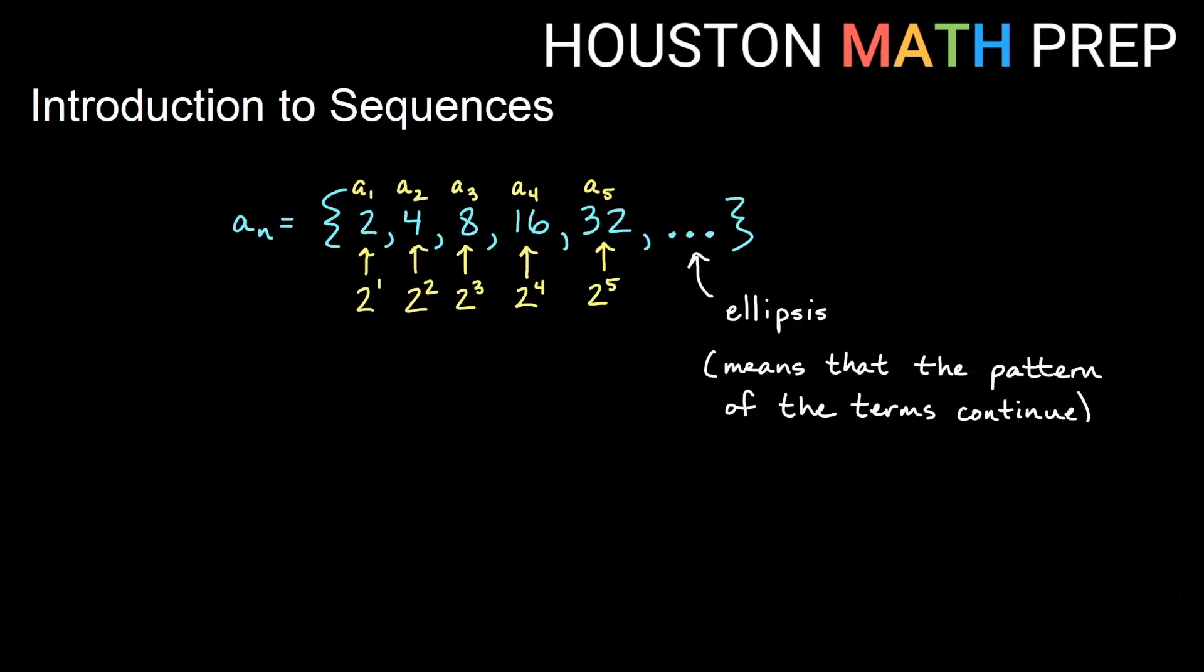We can also relate the term itself to a formula that might produce that term. You'll notice here my a1 is 2 to the 1 and my a2 is 2 squared, a3 is 2 cubed, etc. So it looks like the power of 2, 2 to the 4th, is the 4th term. 2 to the 5 is the 5th term. So we can write an actual formula for this saying that a sub n is 2 to the n, meaning the number of term matches the power of 2 that will give you the value for that term.